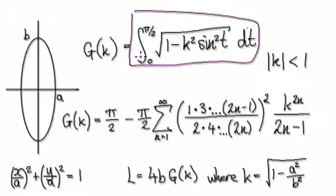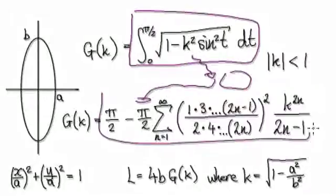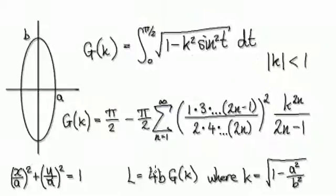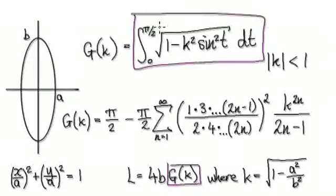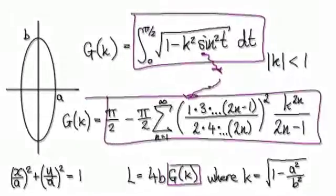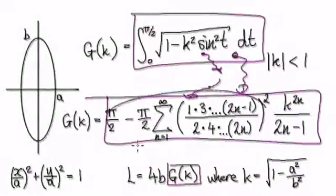We don't know how to integrate this, so we would turn it into a series, and then from the series we would integrate it to give us this. The arc length, or the circumference of an ellipse, is given by 4b times this thing here. We don't know how to integrate this, so we turn it into a series and integrate the series, which gives us this. We are going to try and understand how we get from here to here.